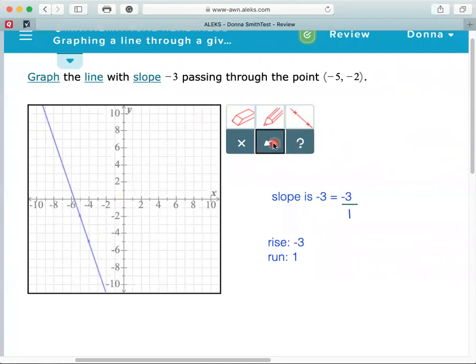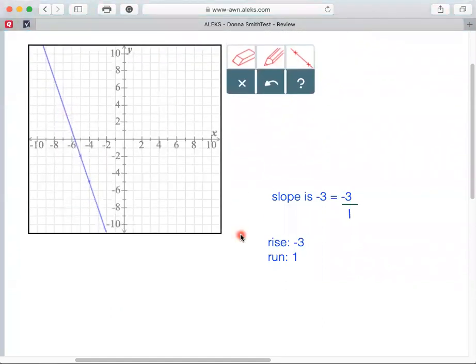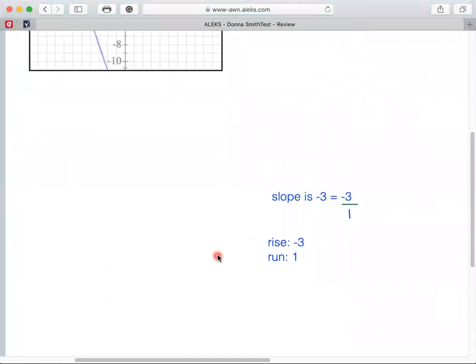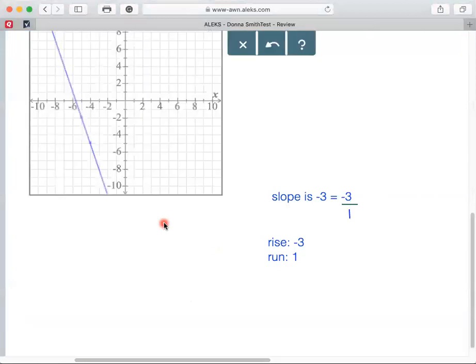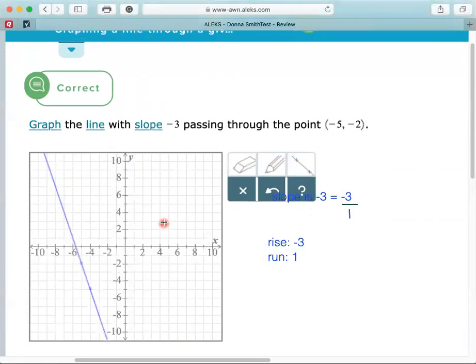I'll click the undo button to get rid of that second graph. So we'll select check, way at the bottom of the screen. I'm not sure why it's so far down. And again, we've gotten it correct. So I hope this part two of graphing the line, given the slope and an ordered pair, has been helpful for you. That's Professor Smith signing off at 916-813-9027. Bye-bye.